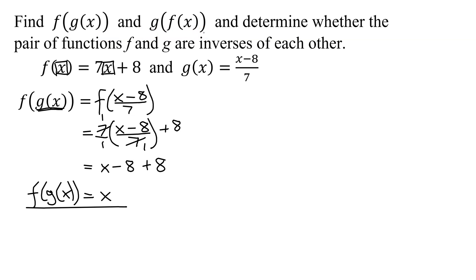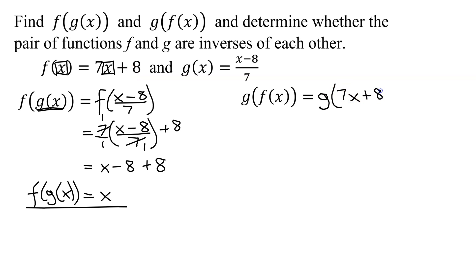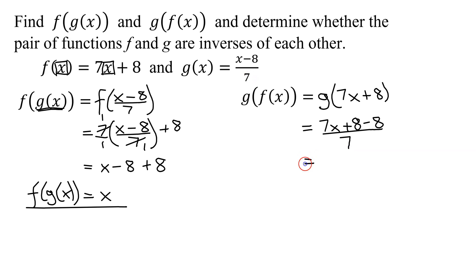Now we need to find g of f of x. So g of f of x equals g evaluated at f of x. And what's f of x? 7x plus 8. So now to figure out g of 7x plus 8, every x in g of x has to be replaced by 7x plus 8. So this x now becomes 7x plus 8, and then I have minus 8, and that whole quantity is divided by 7.